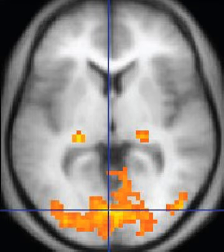Since many images are taken milliseconds apart, it shows how the brain responds to different stimuli, enabling researchers to study both the functional and structural brain abnormalities in psychological disorders. MRI is also used in guided stereotactic surgery and radiosurgery for treatment of intracranial tumors, arteriovenous malformations, and other surgically treatable conditions using a device known as the N-localizer.